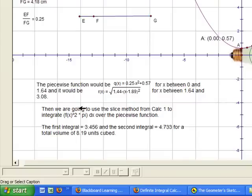And using a calculator, I found the first integral was 3.456 and the second integral was 4.733. So when you add those together, you get a total volume of 8.19 units cubed.